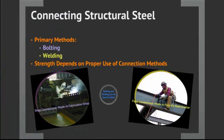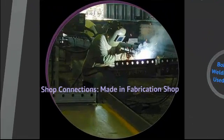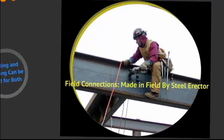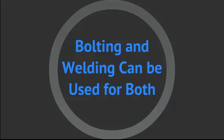Some connections for structural steel include bolting and welding. The strength depends on proper use of construction methods. In-shop connections are done in the fabrication shop, while field connections are made in the field by a steel erector. Bolting and welding can be used in both field and in-shop applications.